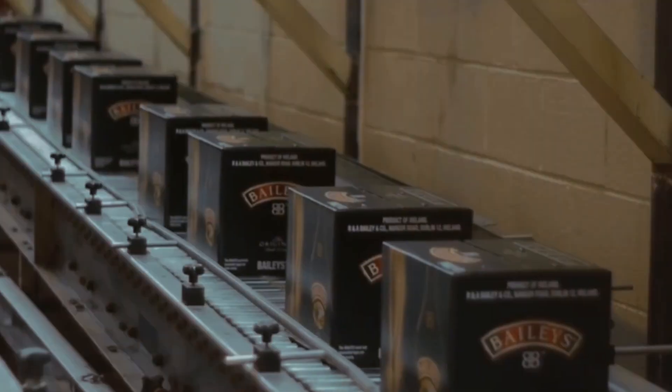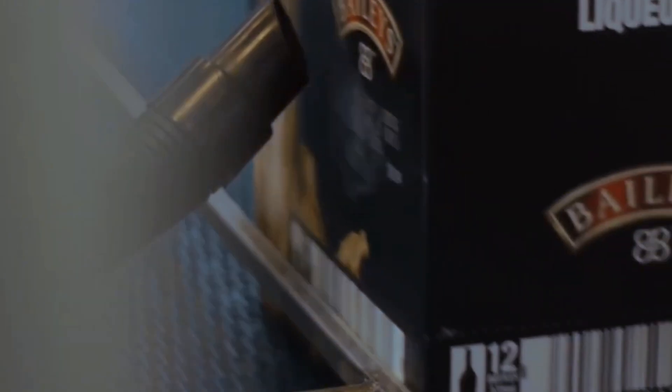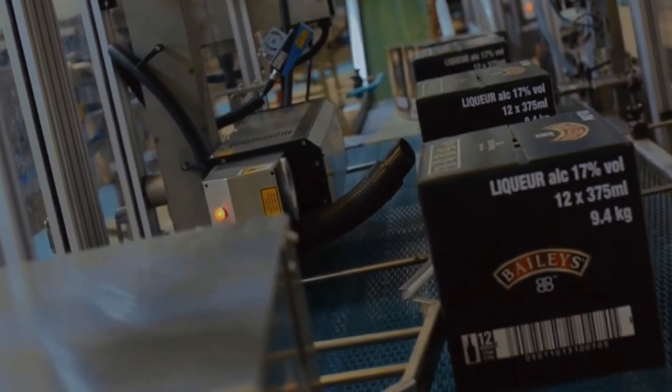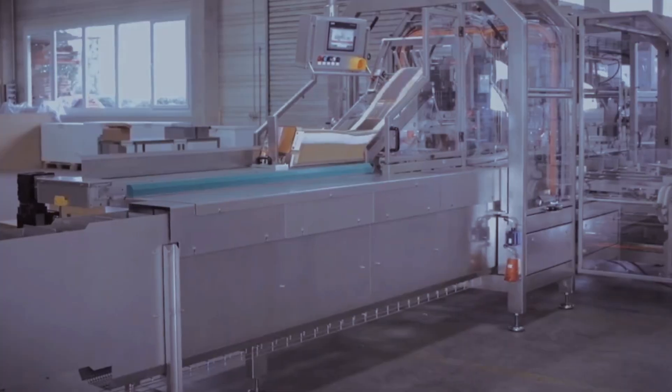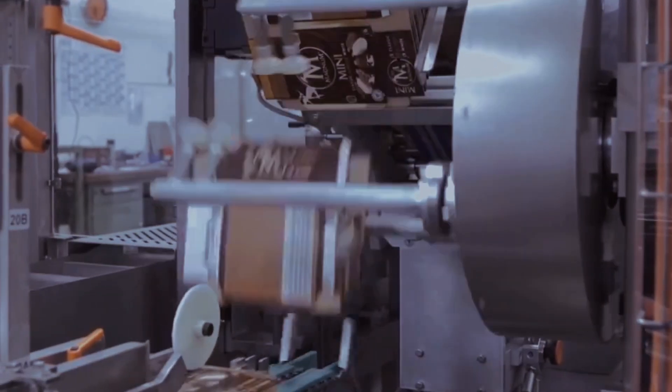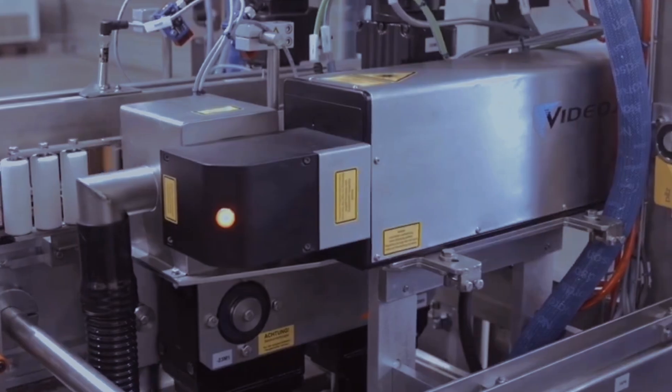The MarkMaster Pro is a versatile coding and marking machine crucial for food manufacturing traceability. This machine allows for on-demand printing of variable information like batch numbers, expiration dates, and barcodes directly onto packaging. With high-speed printing capabilities, it integrates seamlessly into production lines, enhancing traceability and compliance. The MarkMaster Pro contributes to accurate inventory management, meeting regulatory standards while providing food manufacturers the flexibility to adapt to evolving market demand.